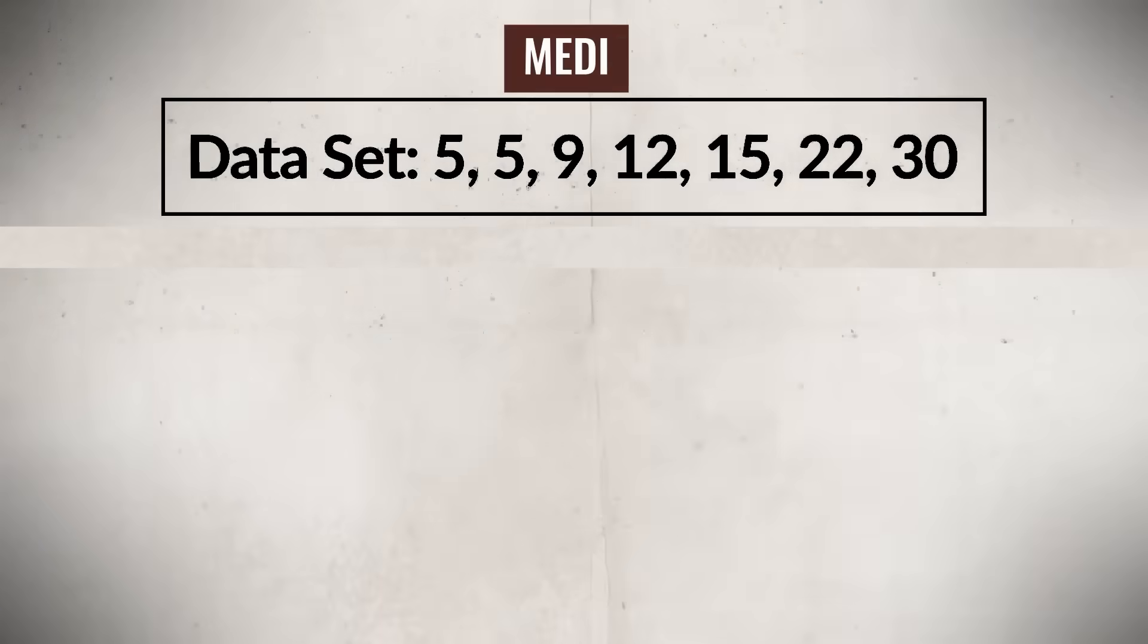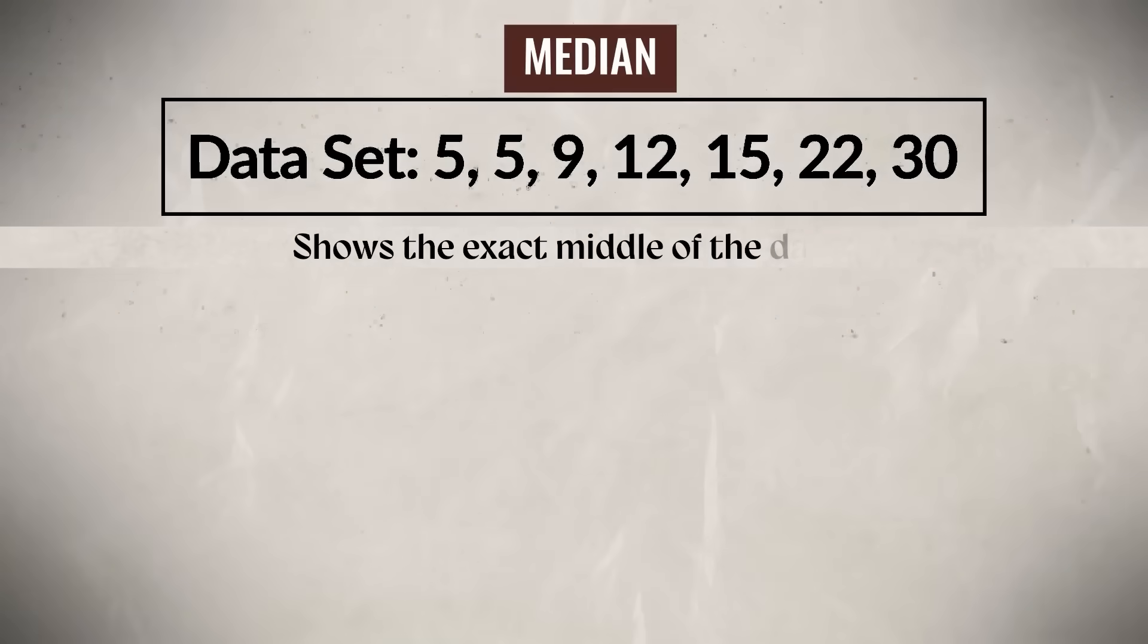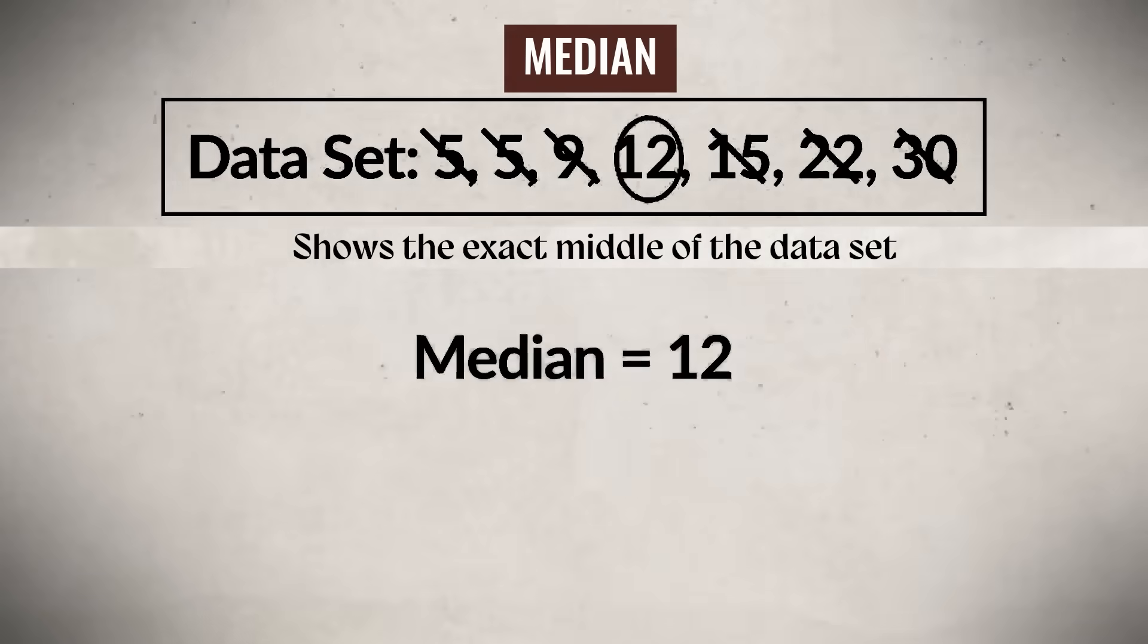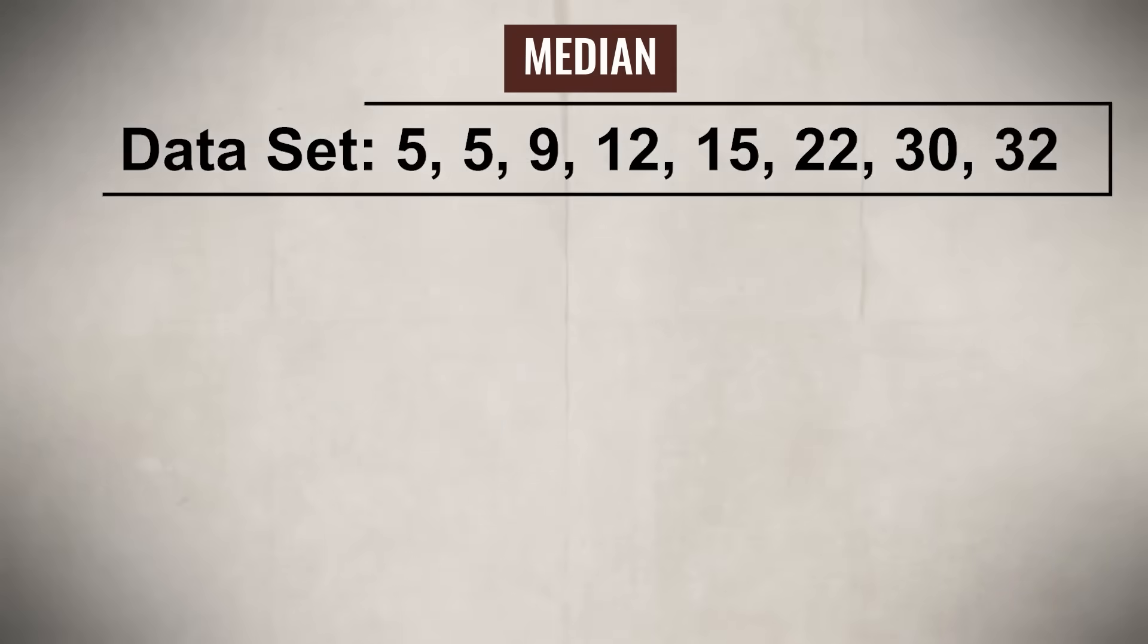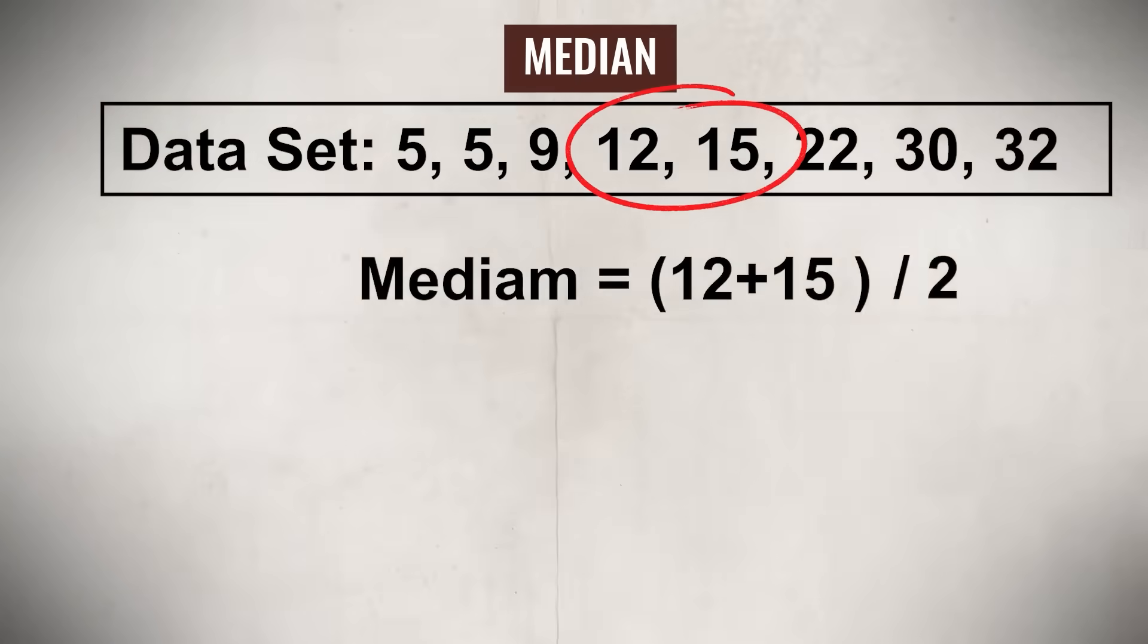Lastly, there is median, which you will use when you want to find the score that is at the exact middle of the dataset. To find the median, you need to organize your data in order of smallest to largest. If you have an odd amount of values, you take the value that is in the middle. And if you have an even amount of values, then you add up the two values in the middle and divide by two. Remember, unlike the mean, the median is not affected by extreme outliers.